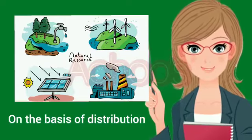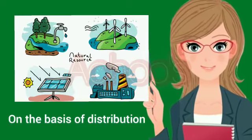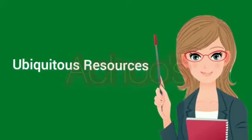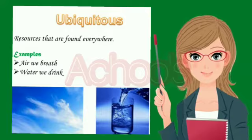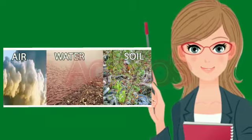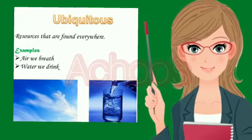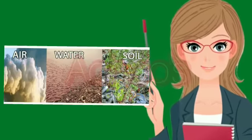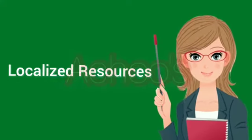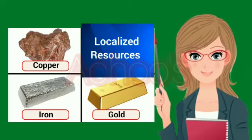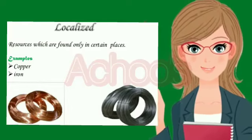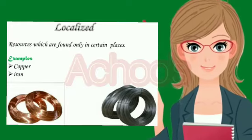The fourth category is on the basis of distribution, further divided into ubiquitous and localized resources. Ubiquitous means present, appearing or found everywhere. So resources that are found everywhere — for example, the air we breathe — are called ubiquitous resources. These are abundant and easily available. Localized resources, such as iron ore, copper and gold, are found only in specific places. They are called localized resources and these resources are limited and exhaustible.